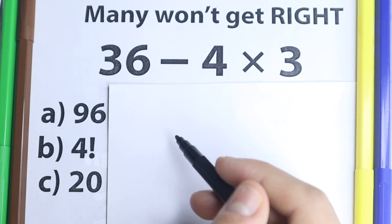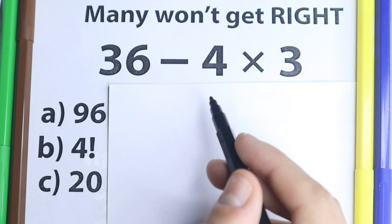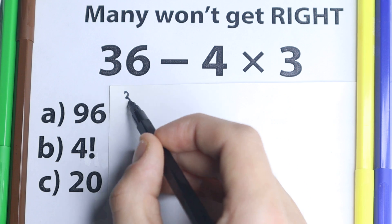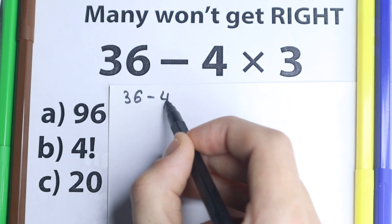Now pause the video real quick and try to solve it by yourself. It will be really interesting to check our answer here in just 30 seconds, this is a really interesting and tricky question. But before solving this, I'm going to show you this solution to this question. So we have 36 minus 4 times 3.